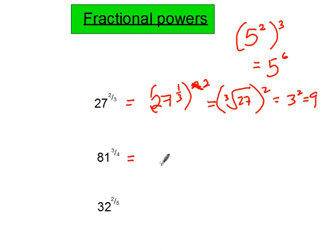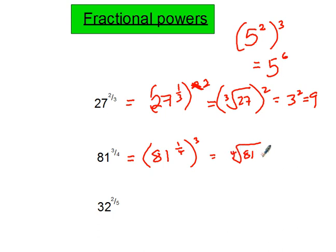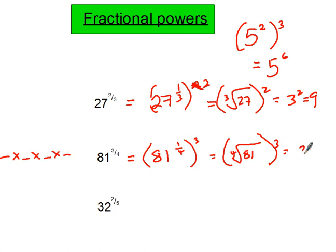For 81 to the power of three quarters, I find a unit fraction to use — that's one quarter — then raise to the power of 3, since 1 quarter times 3 gives 3 quarters. So I need the fourth root of 81, then cube the result. Trying 3: 3 times 3 is 9, times 3 is 27, times 3 is 81, so the fourth root of 81 is 3. Then 3 cubed — 3 times 3 times 3 — is 27.